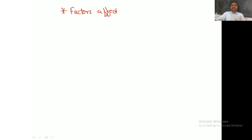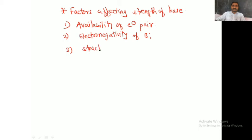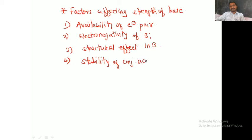Now let's look at the factors affecting the strength of a base. The first factor is availability of the electron pair. The second factor is the electronegativity of B. The third is structural effects in B. The fourth factor is the stability of the conjugate acid BH⁺. And the last factor is the solvent effect.